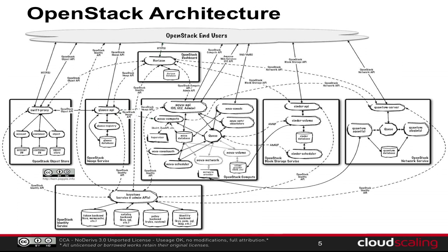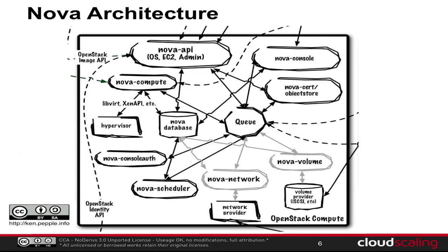Hopefully you've all seen this — this is the big scary diagram of what OpenStack looks like today. We're going to talk about the big component in the middle: Nova. This diagram itself is also pretty big and a little scary, and we're going to talk about how you can change it, customize it, and do more than just the standard basic things that everybody else does.